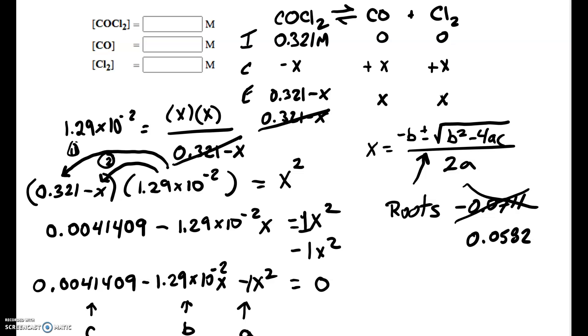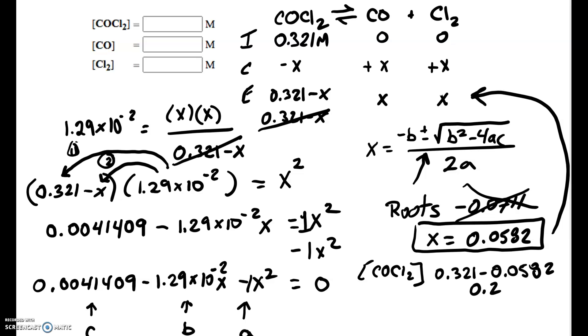And now that we know what X is, we can put it back into our equilibrium row of our ICE table and solve for those equilibrium concentrations, which is what we need. So I'm going to write the brackets that indicates concentration of COCl2. So this is 0.321 minus 0.0582. And that equals 0.263. And then my CO and my Cl2 are just equal to X. So that's 0.0582 molar. Units are in molarity.